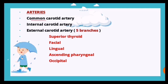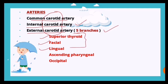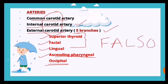The arteries in the carotid triangle are the common carotid artery and its branches - the internal carotid and external carotid. That is why it is called the carotid triangle. Of the external carotid branches, five are present: the facial, ascending pharyngeal, lingual, superior thyroid, and occipital arteries - you can remember these as FALSO.